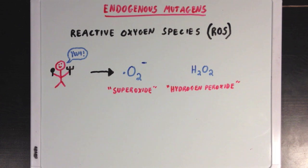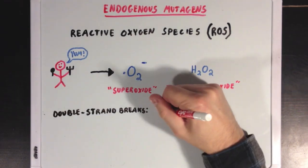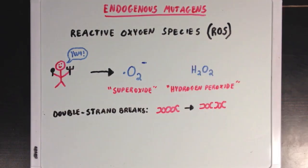Reactive oxygen species, as their name suggests, contain oxygen and are highly reactive with different cell components, including DNA. By reacting with DNA, they can cause significant damage to a cell's genetic code. One example of this damage is the double-strand break, where ROS can actually break a DNA double helix into two smaller pieces — which quite significantly changes the structure of the cell's DNA.